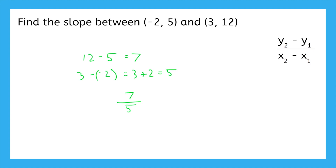Notice how when we set up the slope formula, we always go in the same direction with the x's and y's from the points. With the y's, we did second point minus first point, and the same for the x's. Make sure you always go in the same direction for both. If we instead did first then second with the x's, we would have gotten the wrong slope.